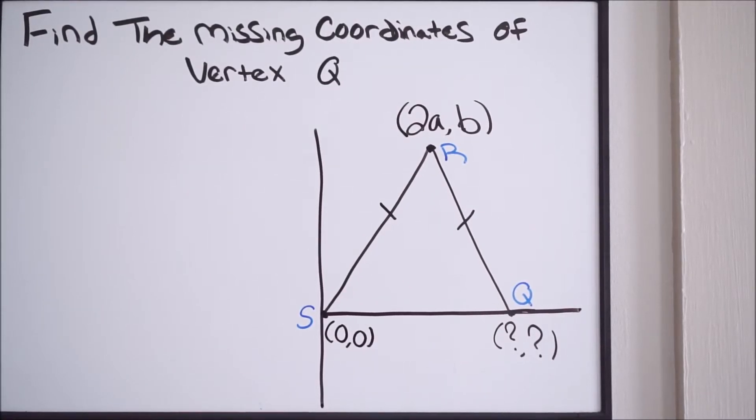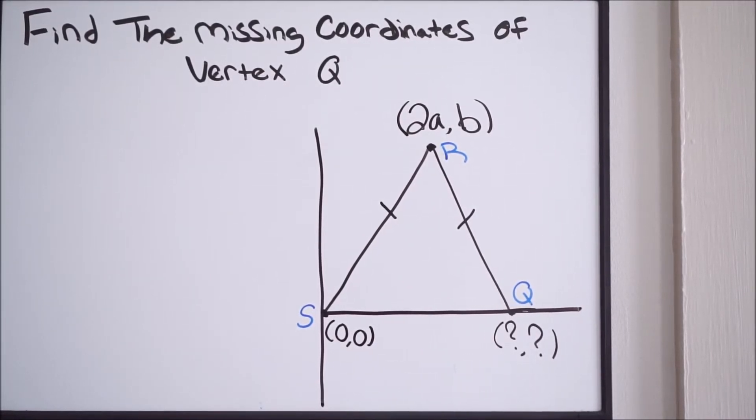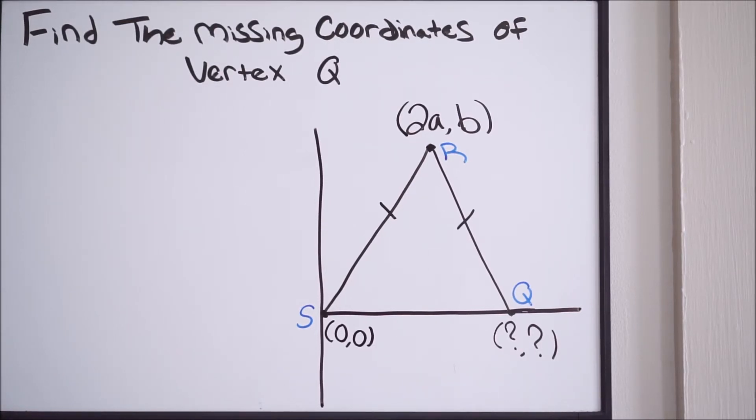In this video we're going to be talking about coordinate proofs and we're being asked here to find the missing coordinates of vertex Q. We can see that we have a coordinate plane here with an isosceles triangle drawn on it.